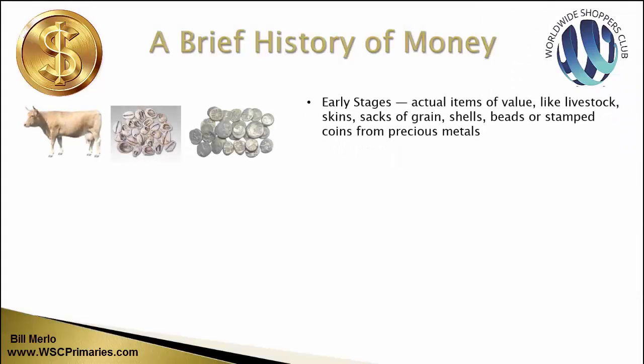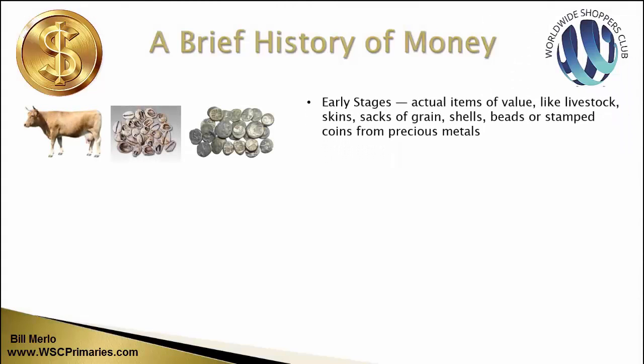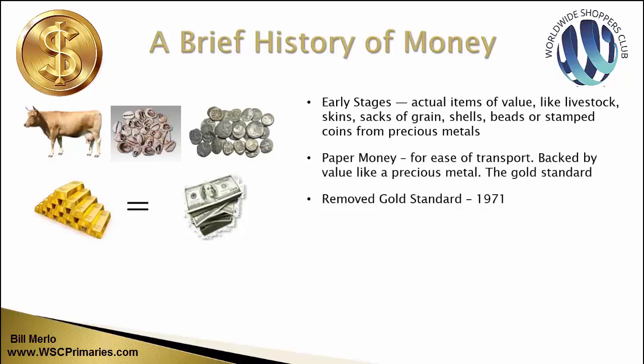Let's go ahead and talk about currencies in general — let's talk about money. Early stages of money could have been anything: livestock, skins, sacks of grain, shells, beads, anything that could be traded. But then it kind of turned into precious metals. That's when the gold standard came along. We used to have paper money because it became easier to transport, but it was backed by a precious metal.